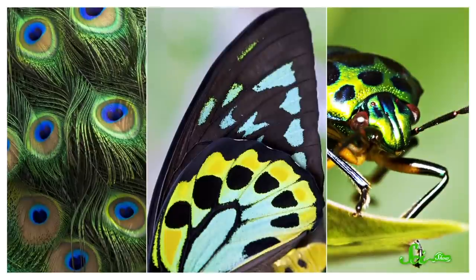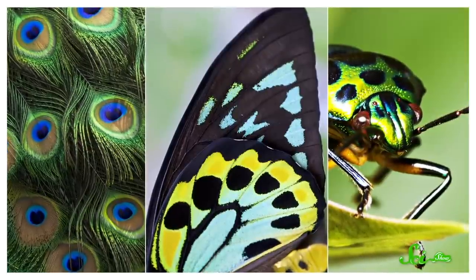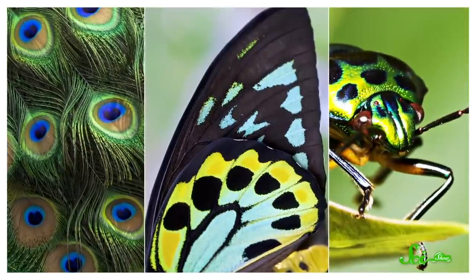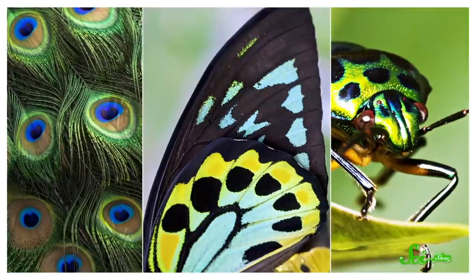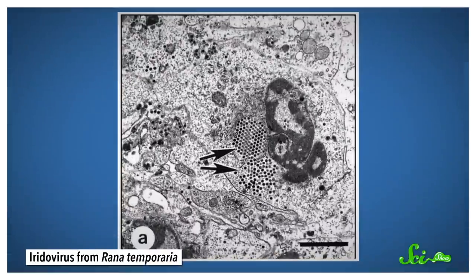The color you see doesn't just depend on the colors that are reflected — it depends on the physical arrangement, separation, and reflective properties of whatever's doing the reflecting. You can find structural color in butterfly wings, birds, beetles, and plenty of other species. And you can find it in animals tinted by iridoviruses.